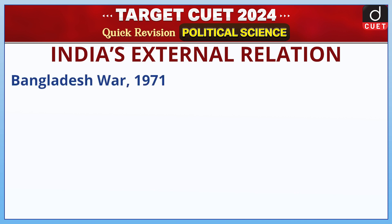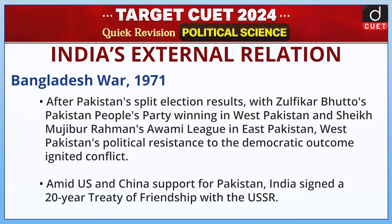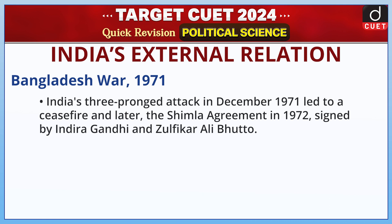Bangladesh War 1971: After Pakistan's split election results — with Zulfikar Bhutto's Pakistan People's Party winning in West Pakistan and Sheikh Mujibur Rahman's Awami League in East Pakistan — West Pakistan's political resistance to the democratic outcome ignited conflict. Amid US and China support for Pakistan, India signed a 20-year treaty of friendship with the USSR. India's two-pronged attack in December 1971 led to a ceasefire and later the Shimla Agreement in 1972, signed by Indira Gandhi and Zulfikar Ali Bhutto.